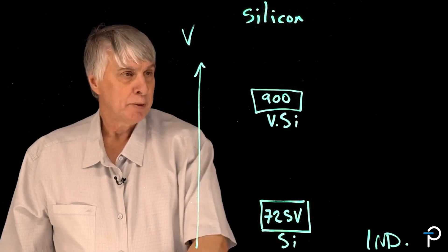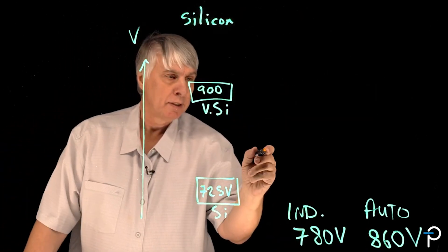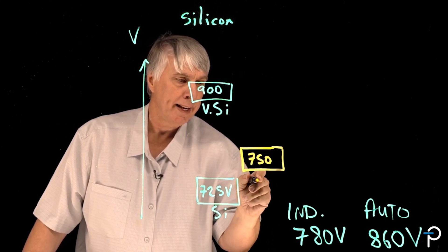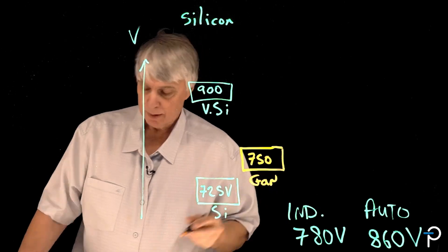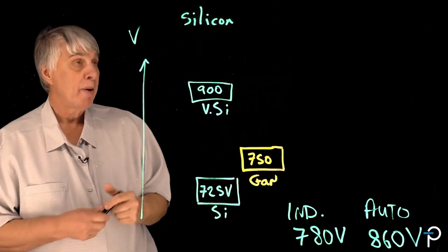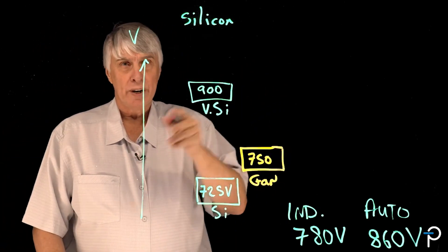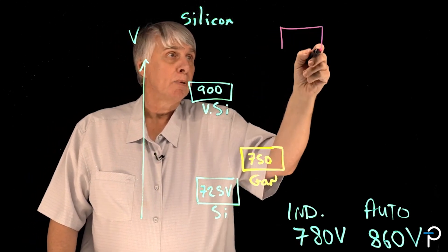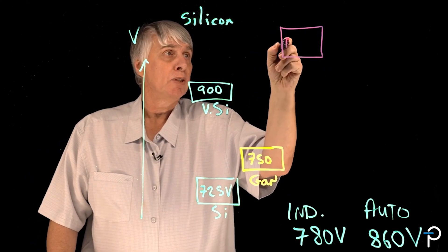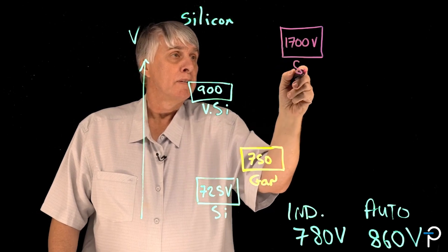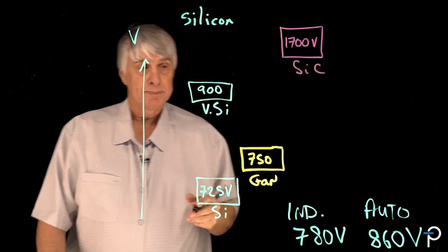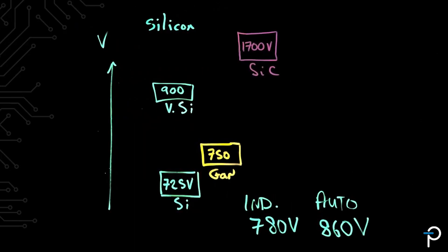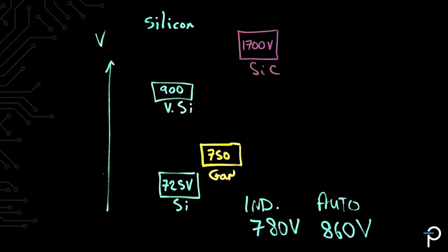In addition, Power Integrations introduced 750 volt GaN and for very high voltage applications or for areas where we need a lot of derating we also have available 1700 volt silicon carbide. Now as we learned earlier the voltage stressors we're looking for is 780 and 860 volts.